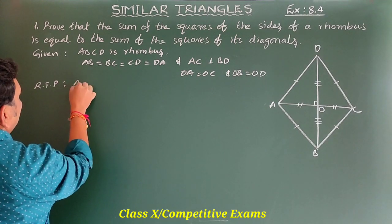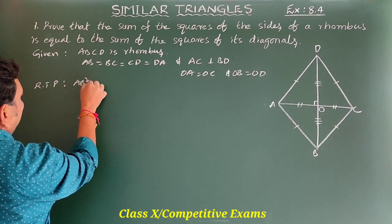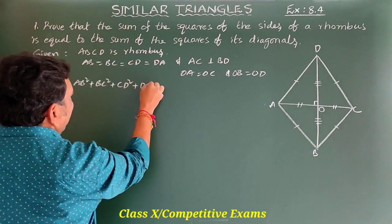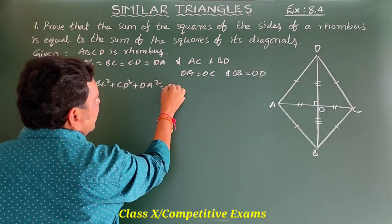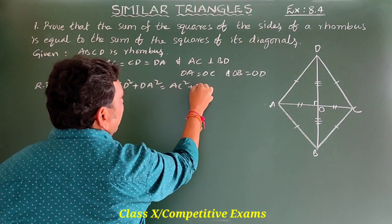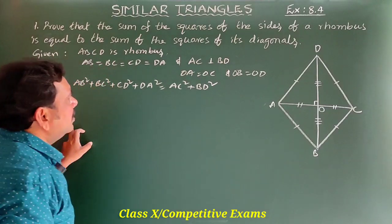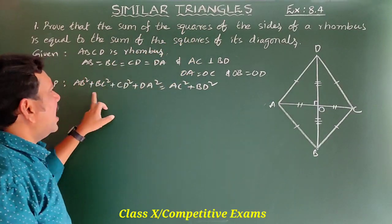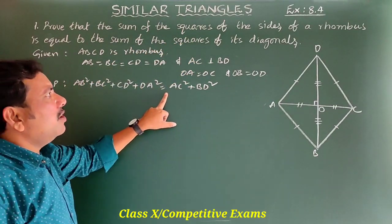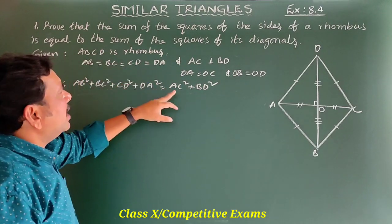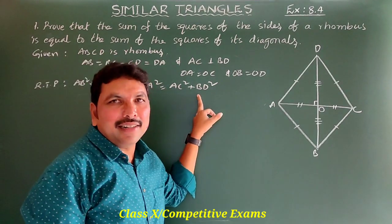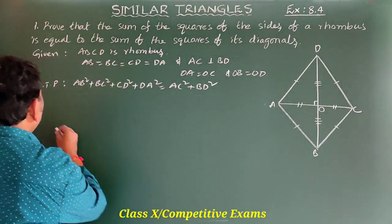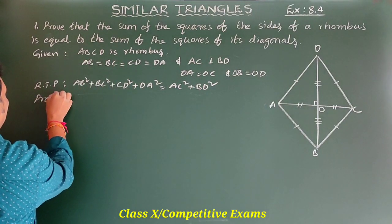What we have to prove? AB² + BC² + CD² + DA² = AC² + BD². That is the sum of the squares of the sides is equal to the sum of the squares of their diagonals. Yes, so let us prove.